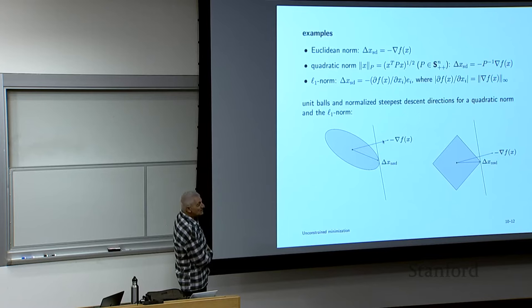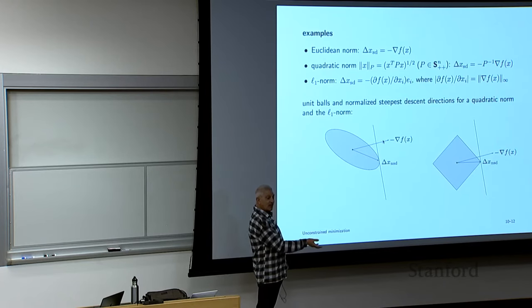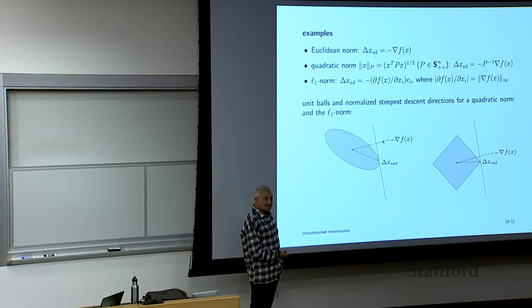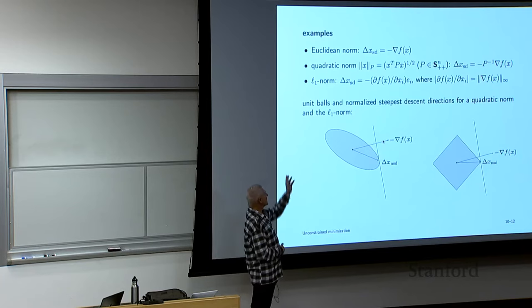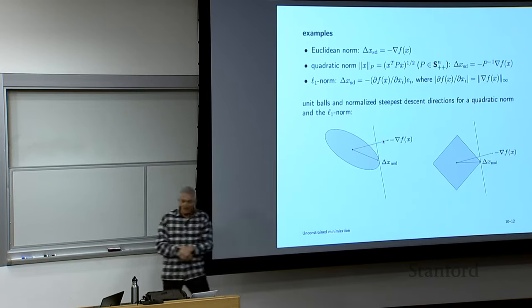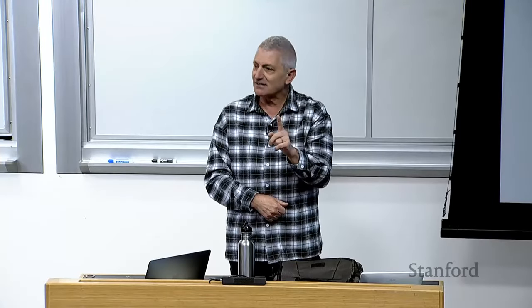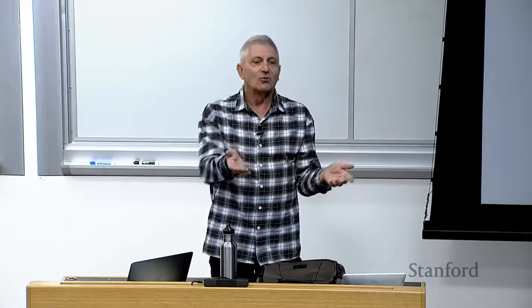If you do the L1 norm, you get something very simple. If you take the inner product of a gradient with a vector whose L1 norm is less than one and minimize it, you find the entry of the gradient that is most negative and go in that decreasing direction. You find the largest partial derivative and go along that axis. This is a so-called axis-aligned step — a named method from the forties and fifties.